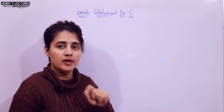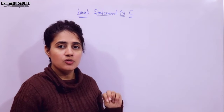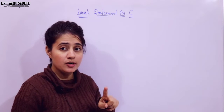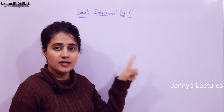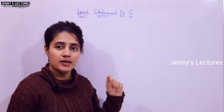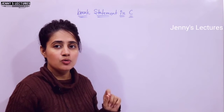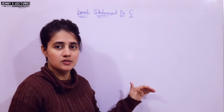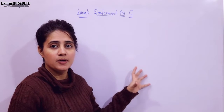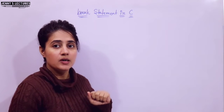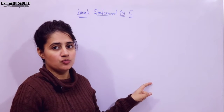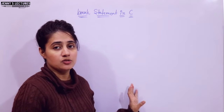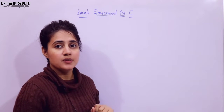Break and continue - these are very important control statements in C, and they are keywords. Keywords are always written in small letters, so we write break and continue in small letters. If you write them in capital letters it will give you an error. In this video I will talk about break statement - why we use it, when to use it, and how the program is executed.